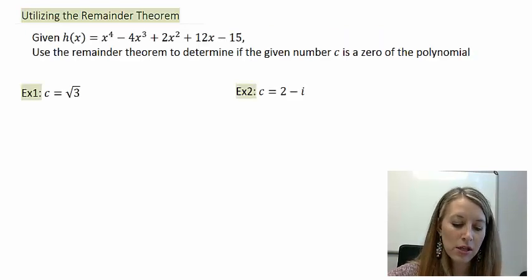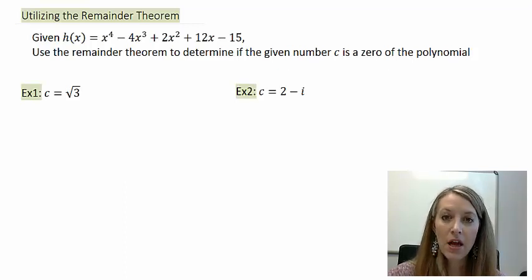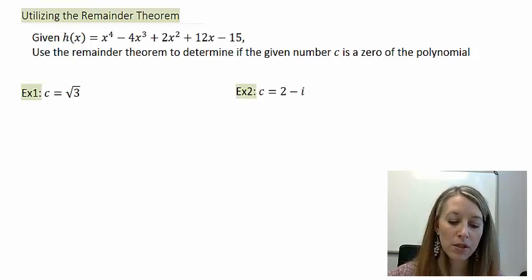So let's look at those examples. We have given the polynomial h(x) = x^4 - 4x^3 + 2x^2 + 12x - 15. A little bit larger polynomial than we've seen in the past, but that's no big deal. And again, we want to use the remainder theorem to determine if either one of these c values is a zero of the polynomial.